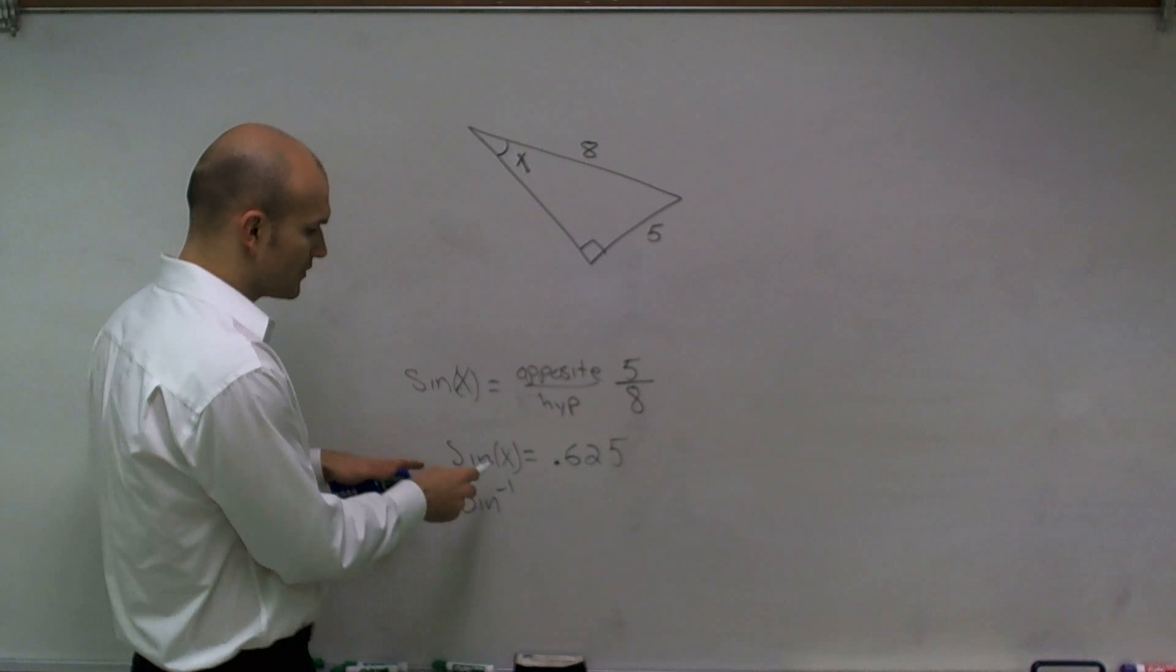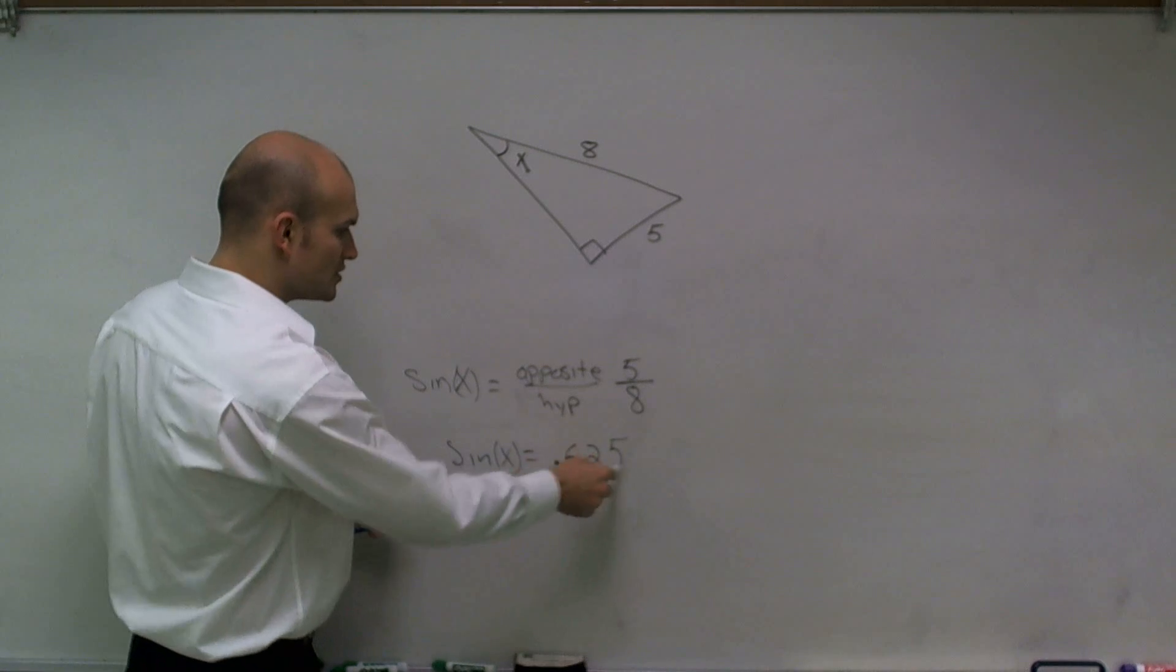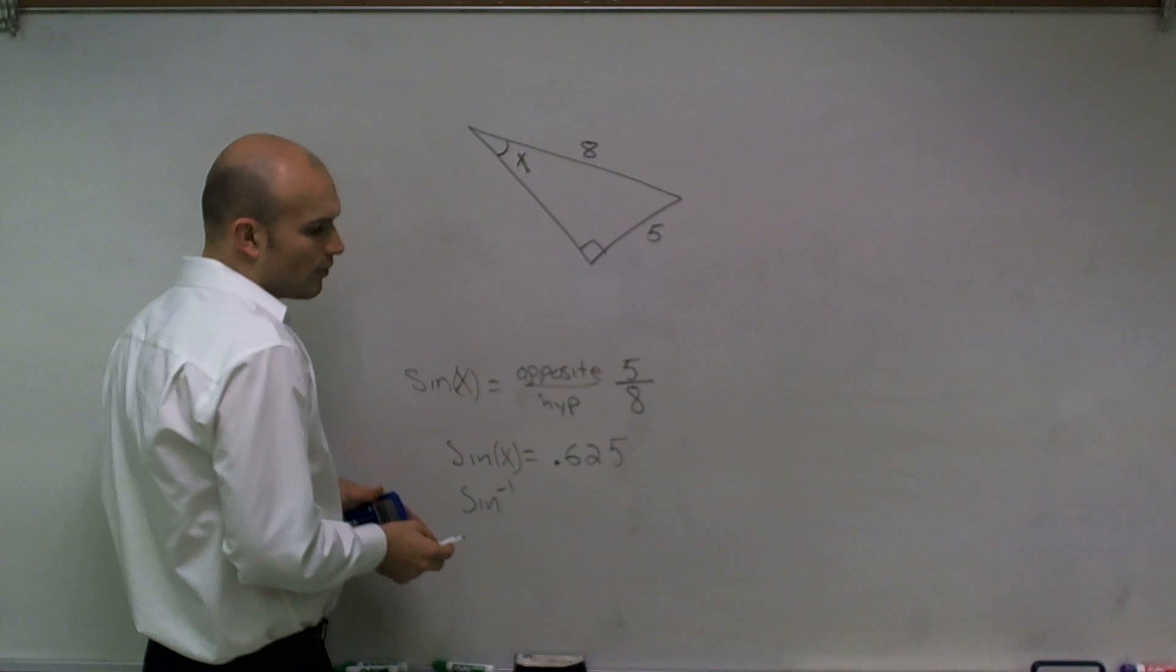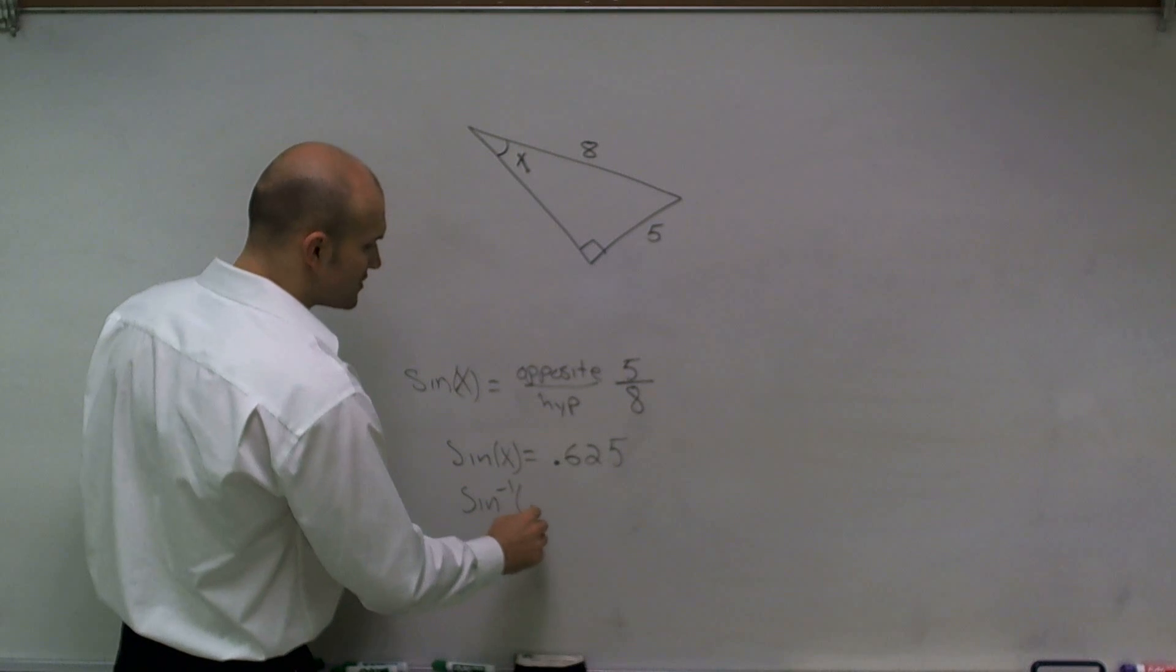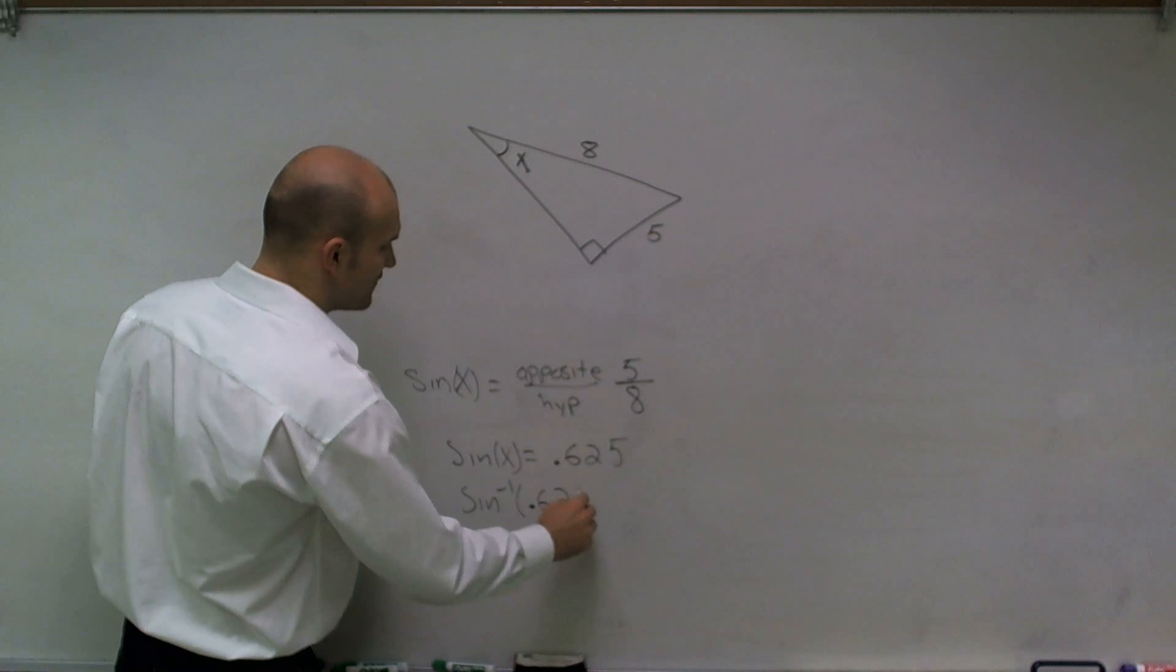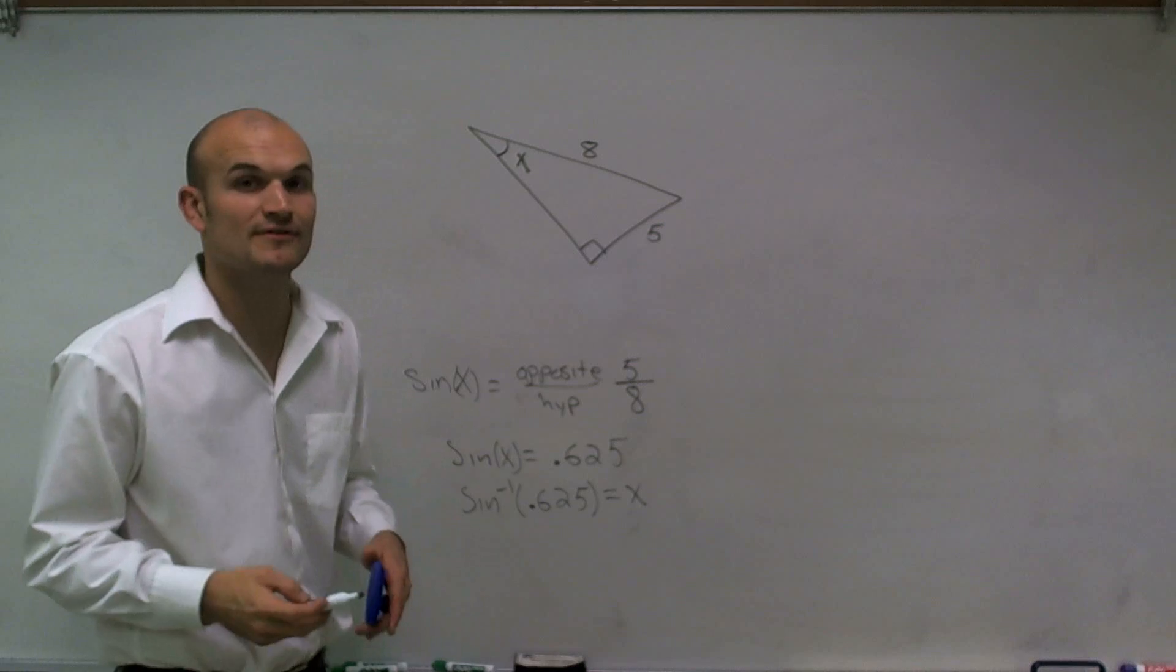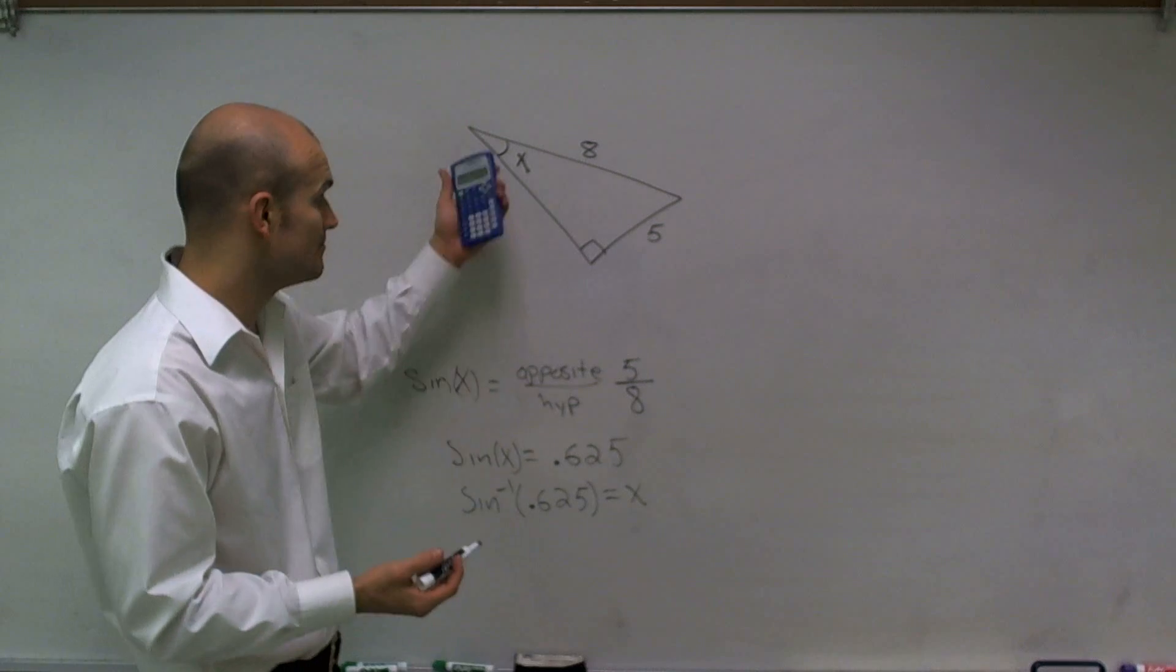All right. So if we're going to undo sine, we want to apply the sine inverse to our value of the function, which is 0.625. So I'm going to say inverse sine of 0.625. And what that's going to give me is the value of my x, which is my missing angle.